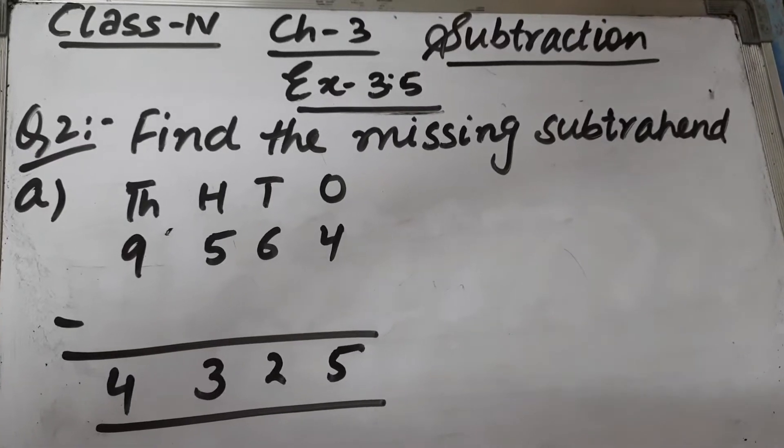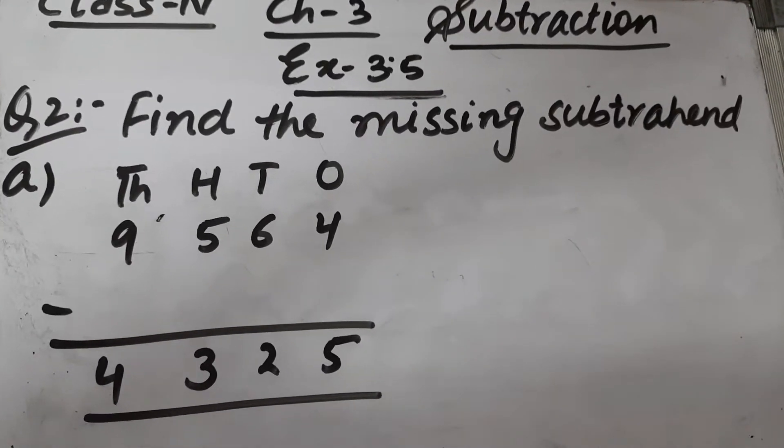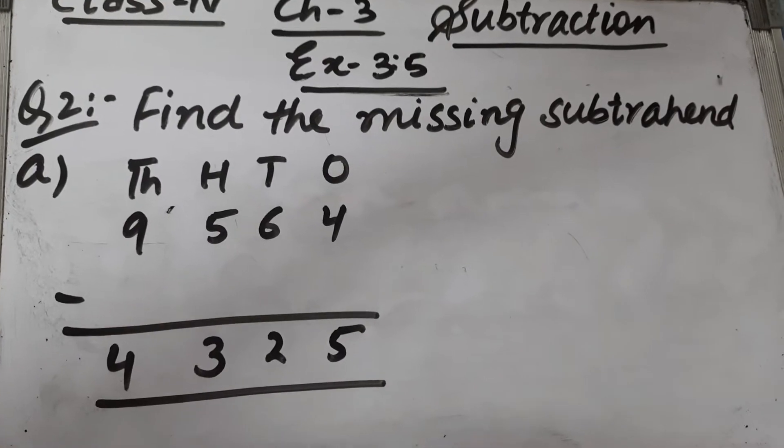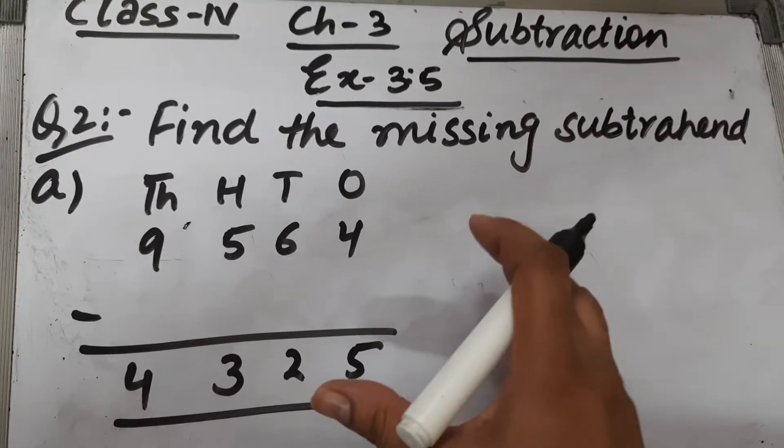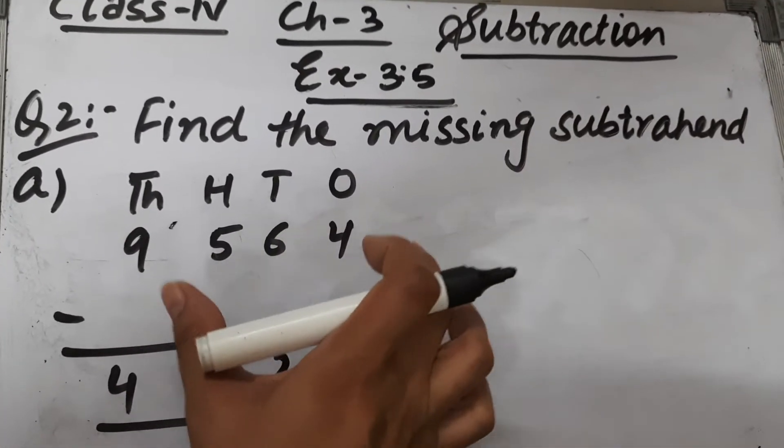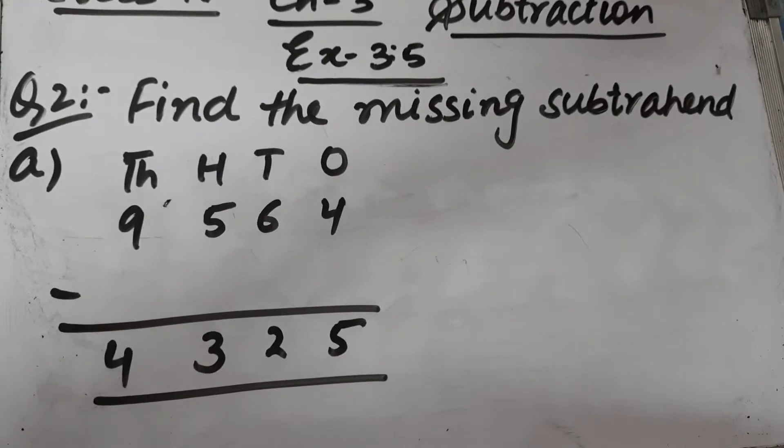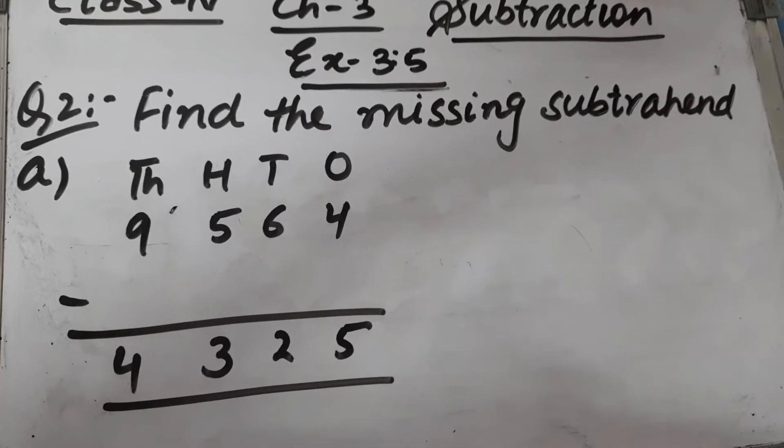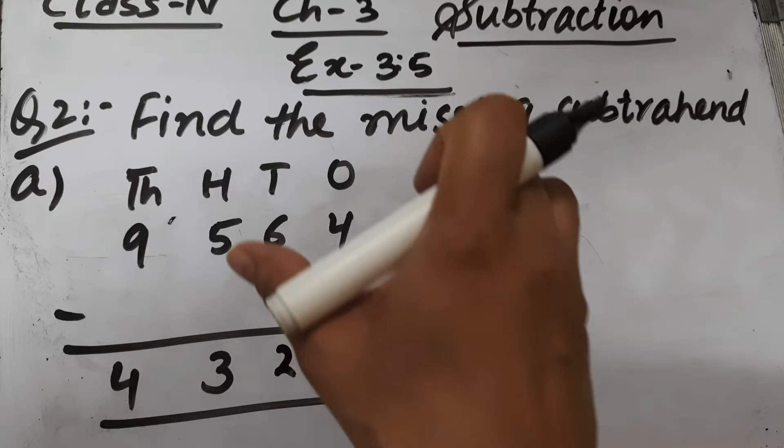Let's start question number 2 of exercise 3.5. The question is: find the missing subtrahend. How do we find the subtrahend? We subtract the difference from the minuend.